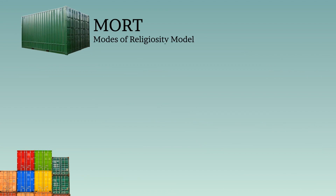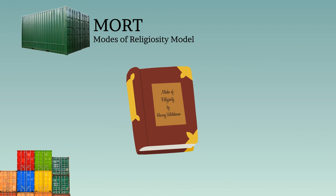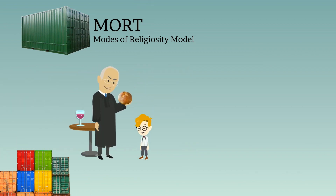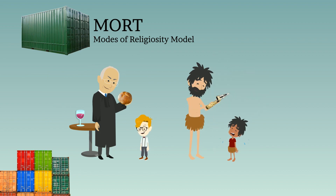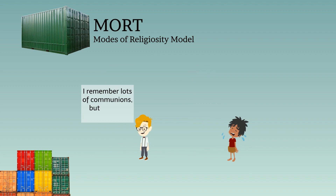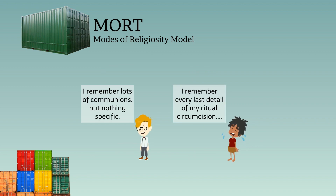The next step is building MORT, which models the Modes of Religiosity Theory. One of the main ideas is that the type of ritual — whether routine, like a weekly communion, or a dramatic initiation episode like a circumcision — determines how it is remembered. The way rituals are remembered then determines how those rituals and doctrines are passed on through generations, and can affect larger cultural patterns like group size.